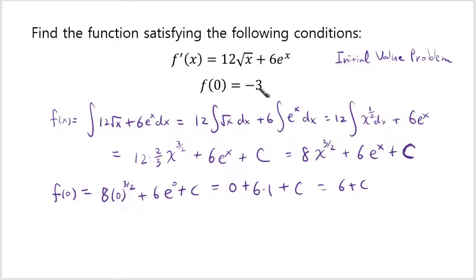Now notice that f of 0 has to be negative 3. So you know that 6 plus c has to equal to negative 3, which means c is equal to negative 9.